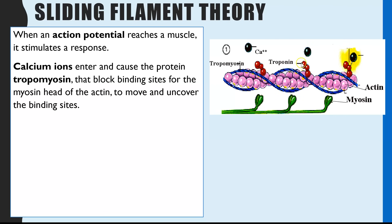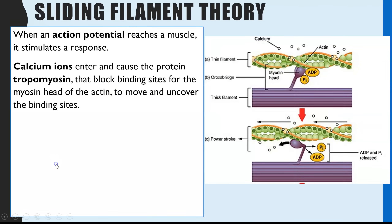There is a second protein attached to the tropomyosin called troponin — that was on the old specification and you do not need to know about troponin for the 2015 AQA spec. What does happen is the calcium actually binds to the troponin and the troponin moves the tropomyosin out of the way. For AQA it's sufficient just to say calcium ions enter and cause the tropomyosin to move, therefore exposing the binding sites.